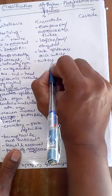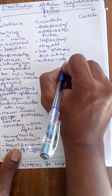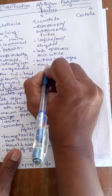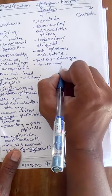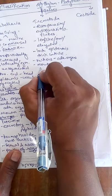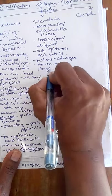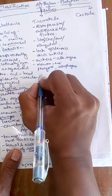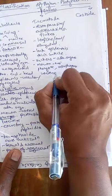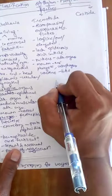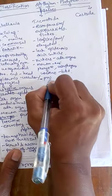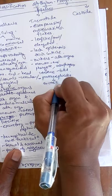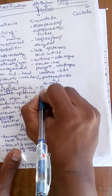Different types of suckers act as adhesive organs, helping the animal remain attached. The mouth is present towards the anterior end. The digestive system consists of mouth, pharynx, esophagus, and an intestine that is large and bifid. Protonephridia are present and act as organs of excretion.